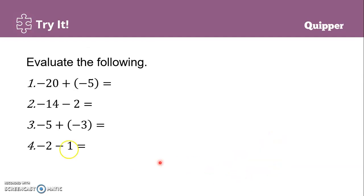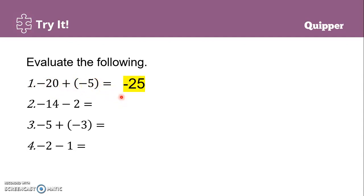Let's try these. Number 1: negative 20 plus negative 5. The plus and negative become negative, so this is negative 20 minus 5. Common sign is negative, so we add 20 and 5 to get 25, and copy the common sign. The answer is negative 25. Number 2: negative 14 minus 2. Same signs — both negative. Copy the common sign, negative, and add 14 and 2. The answer is negative 16.